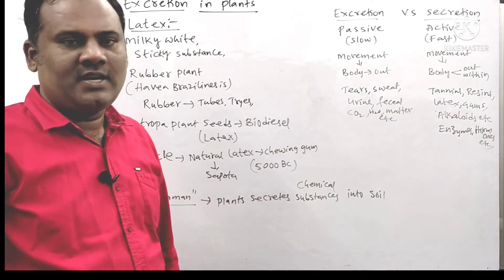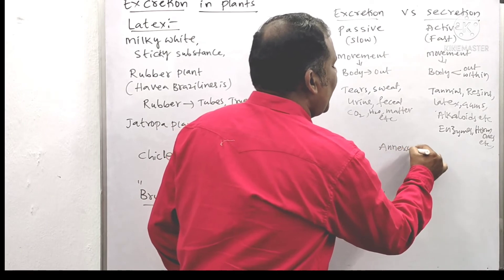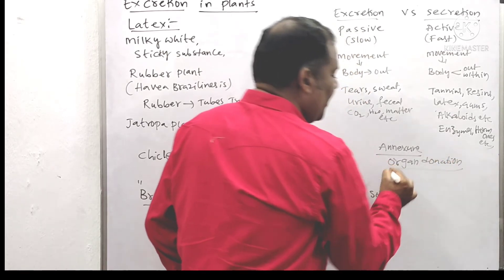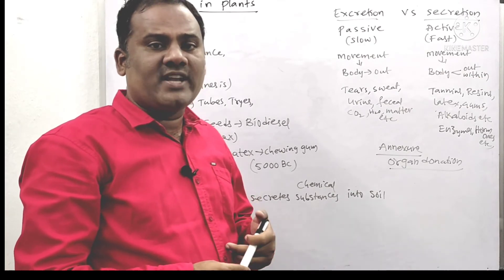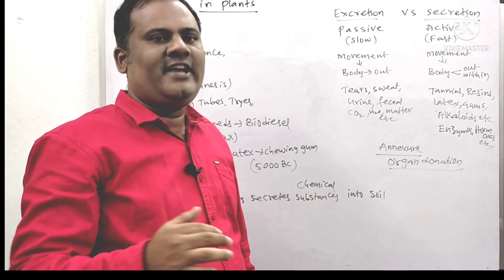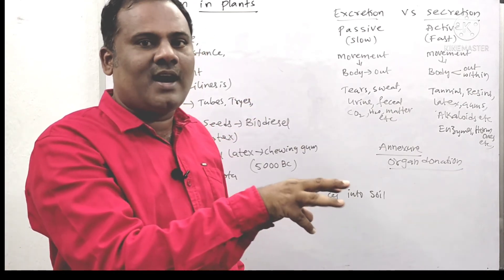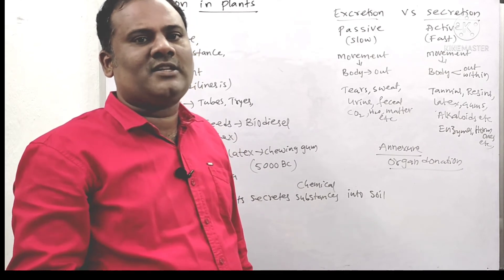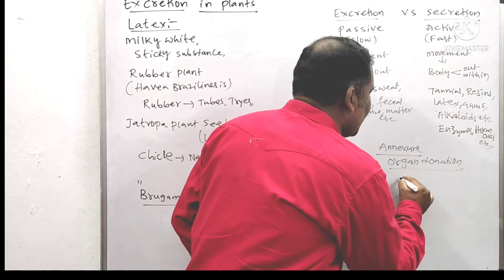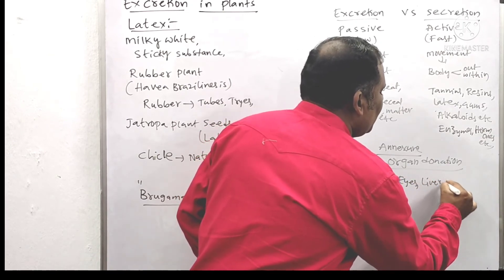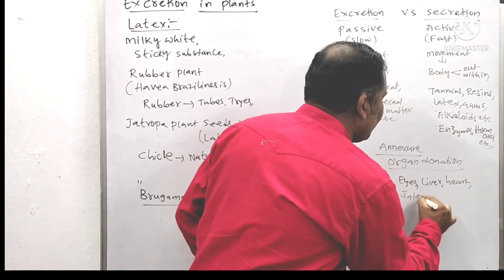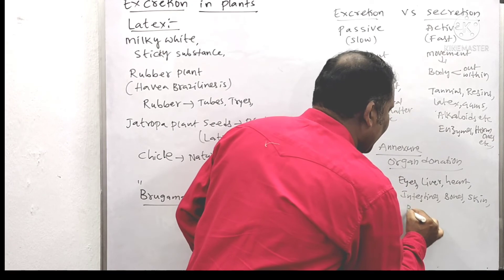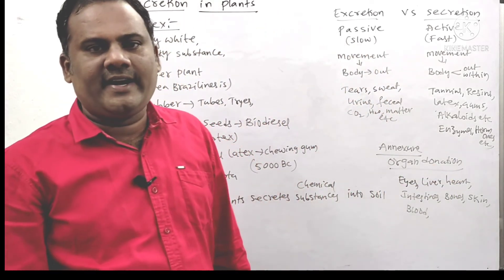Lastly, we have organ donation. Organ donation is very important. If any person is brain dead and donates their organs, a person who needs those organs will get their life. That's why organ donation is a very good process. We should try to bring awareness among people about organ donation. Organs that can be donated include eyes, liver, heart, intestines, bones, skin, and blood.